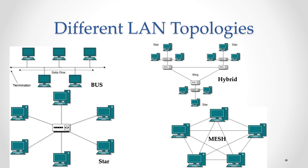Hybrid networks are mainly used when existing networks of different topologies need to be connected together, becoming nodes on another network. Additional advantages include: they can handle large volumes of traffic; it is easy to identify where a network fault has occurred; and they are very well suited to the creation of larger networks. The handling of packets in hybrid networks depends on which topologies are used to make up the hybrid structure.